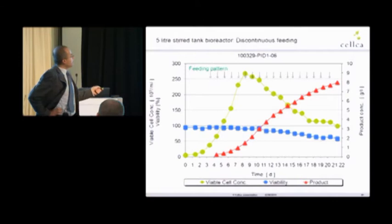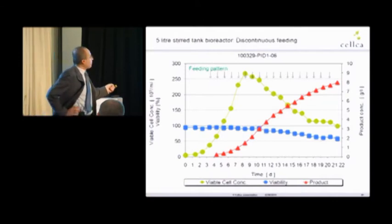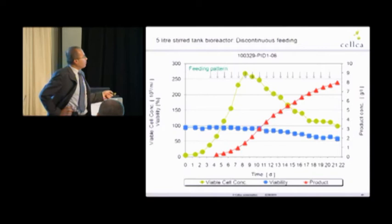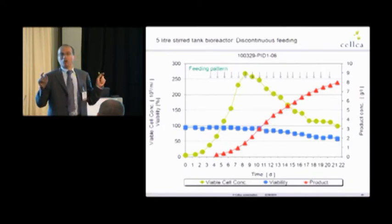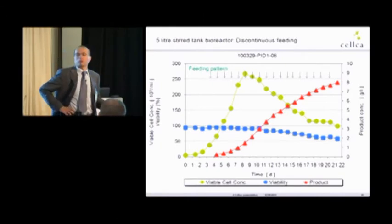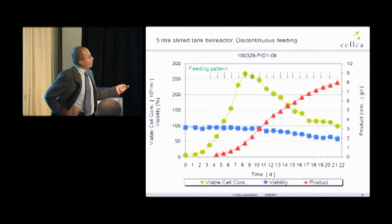And then cells produce 8 grams per liter of antibody, and the viability drops down to 50%. Now, the process, first of all, the good news: high titer. We all like to listen, high titer. But the bad news: long process.